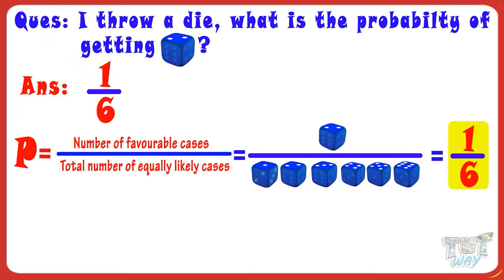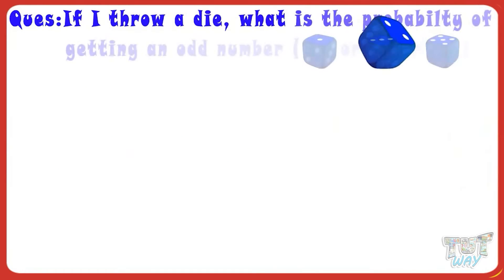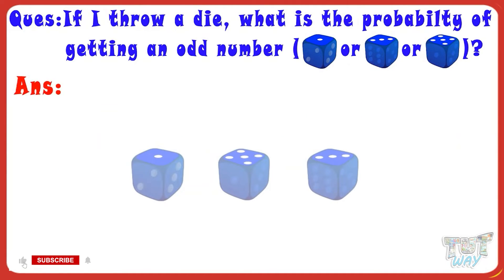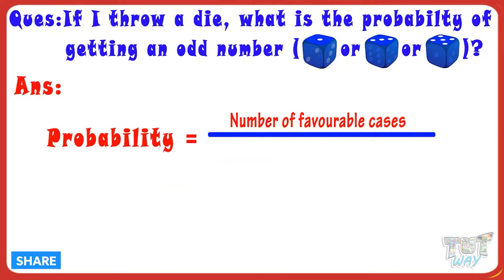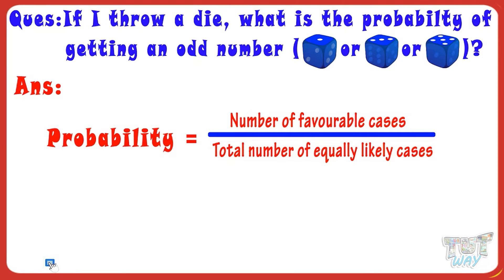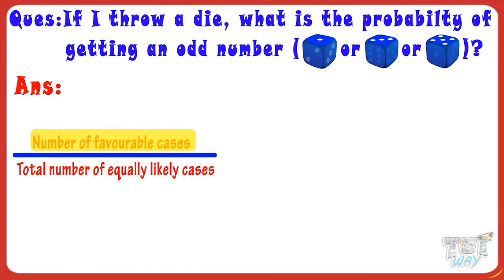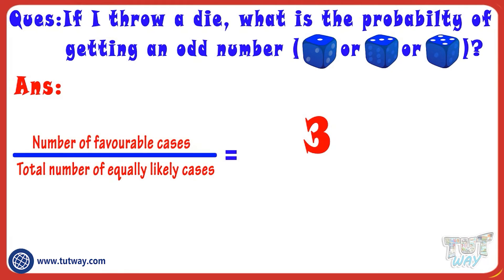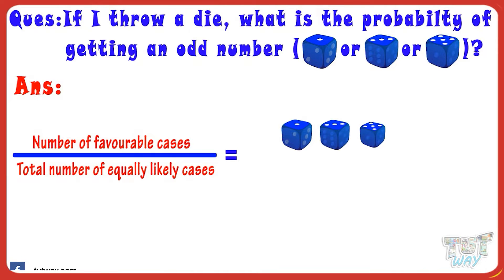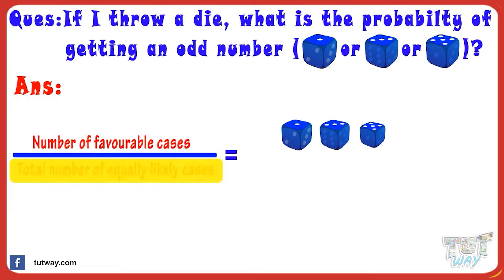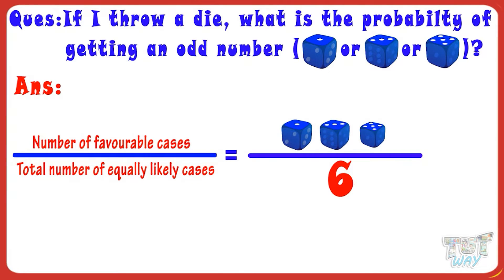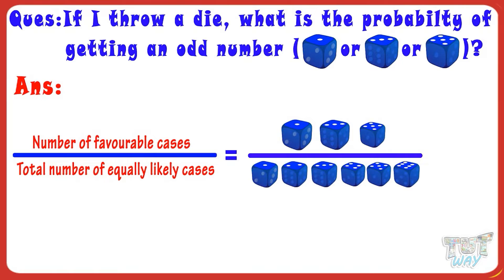Let's take another example. If I toss a dice, what is the probability of getting an odd number? We know probability is number of favorable cases divided by total number of equally likely cases. Number of favorable cases here are three — that is, getting an odd number: one, three, or five in a dice — and total number of cases possible are six. As we know, there are six numbers in a dice, numbering from one to six. So, probability of getting an odd number is three by six, or one by two.